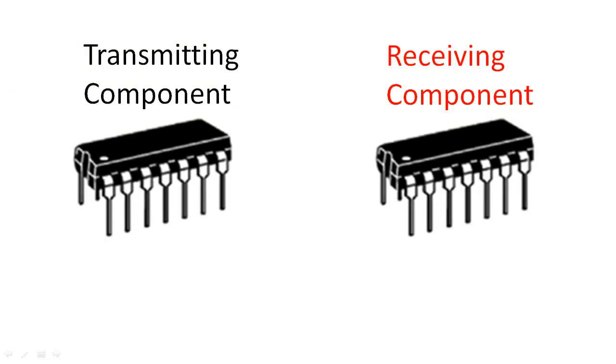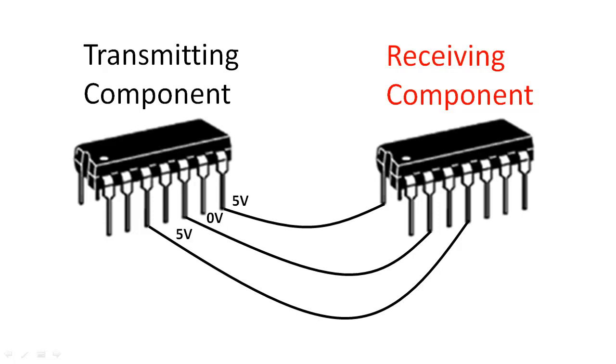When two components of a computer communicate, they send information back and forth by applying voltages to a wire or several wires. The sending component applies the voltage while the receiving component simply accepts the voltage. This process seems simple enough, except that there are many sources of noise that can cause the voltage received by the receiving component to be different from the voltage sent by the sending component.